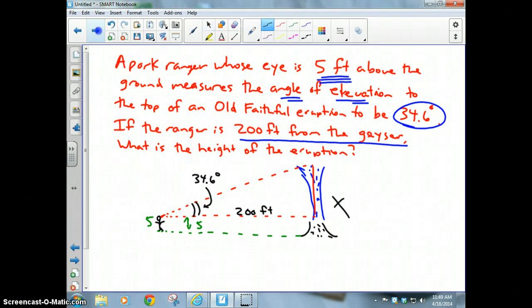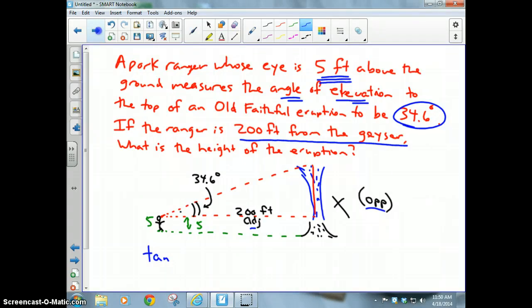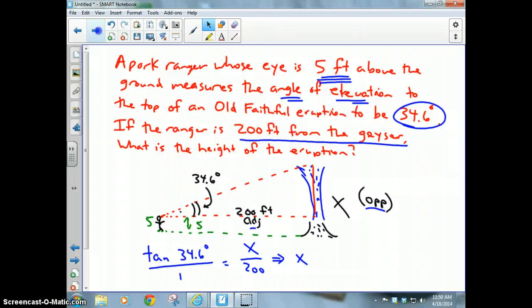So let's use our trigonometry. Since I'm standing right here by this dude, this side over here would be opposite and the 200 feet would be adjacent. Therefore to use those two words, opposite and adjacent, I need tangent. So I'm going to write tangent of 34.6 degrees over 1 is equal to x over 200. So if I cross multiply, I will get x is equal to 200 times the tangent of 34.6 degrees, and I get an answer of 137.97.